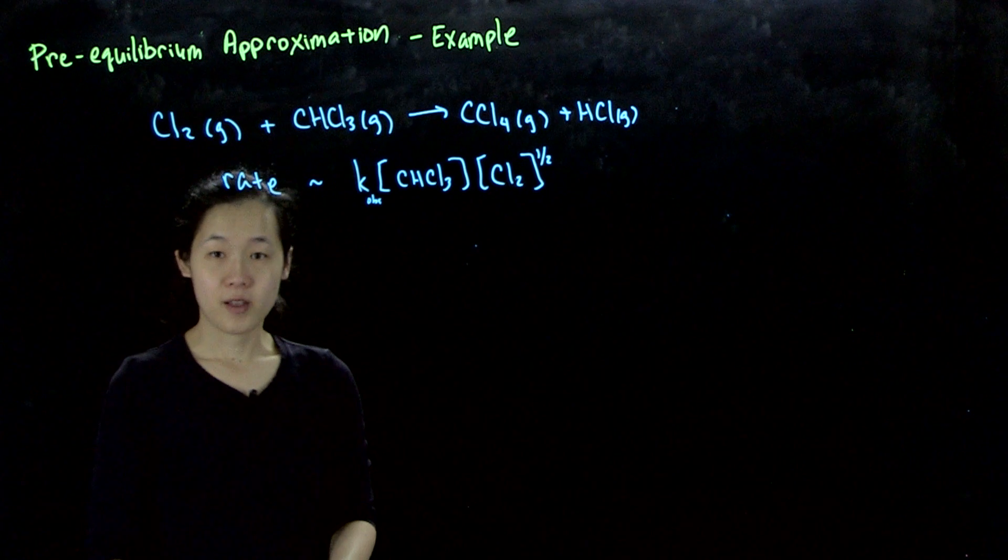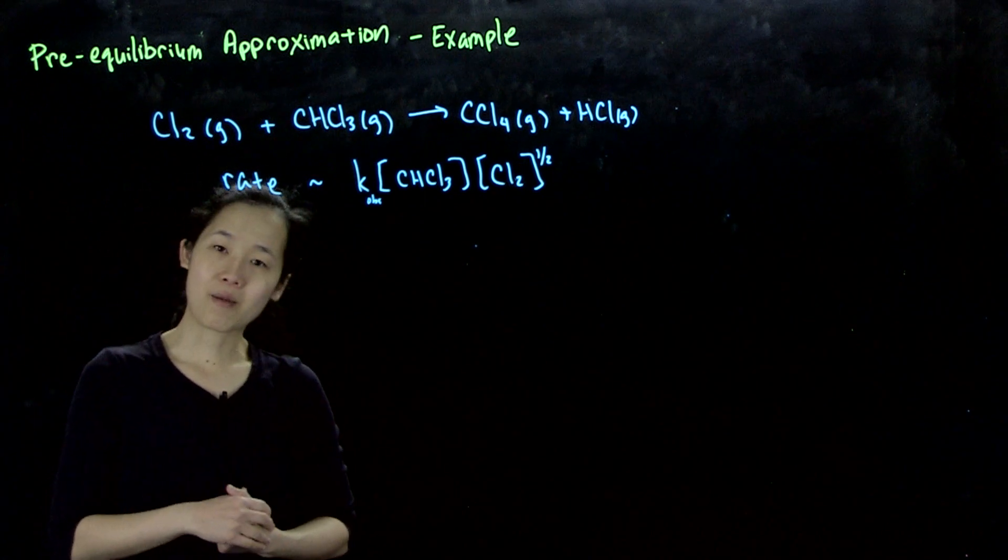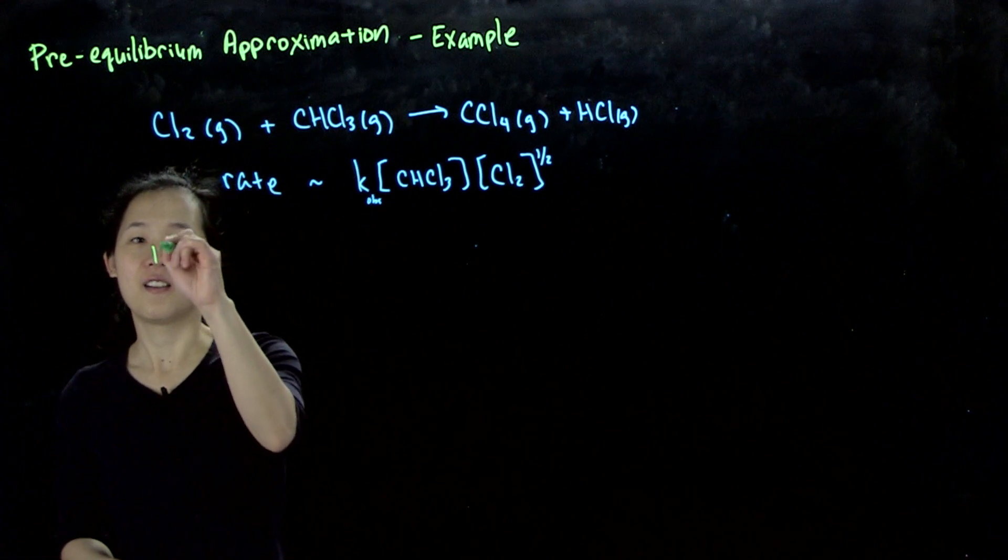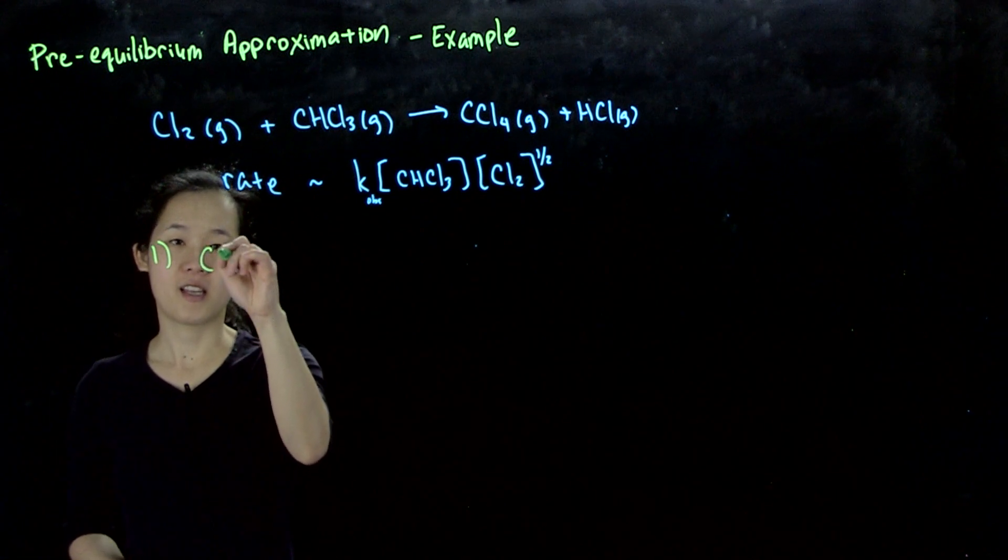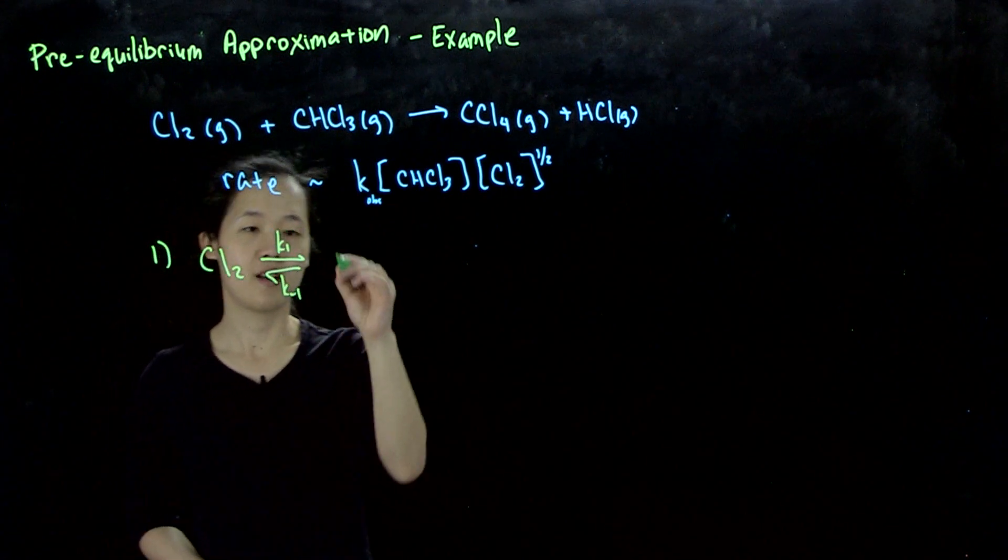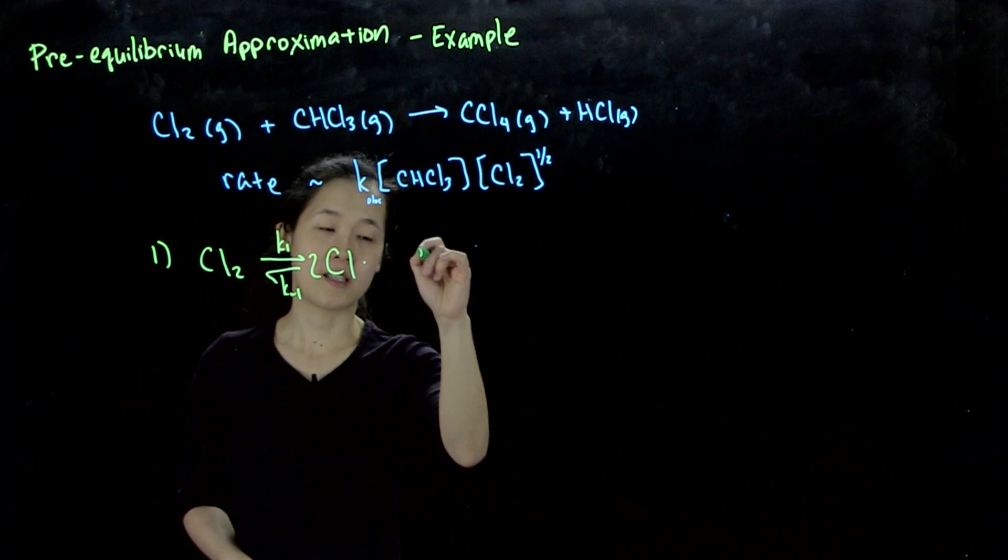One possibility when proposing mechanisms - I'm going to propose what turns out to be the correct mechanism. The first step could be that your chlorine is at equilibrium, k₁, k₋₁, with two chlorine atoms. Let's say this is fast.